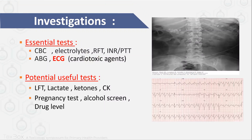Investigations will be very specific to what you think you are dealing with. An ABG is very valuable to get — check for acidosis, lactic acidosis, or methemoglobinemia. Get an ECG in case of arrhythmias or cardiotoxins. Other investigations include drug levels, alcohol screen, and others according to your case. X-rays are of limited benefit in toxicology, but some toxins like heavy metals can appear radio-opaque, as you can see in the picture on the right.